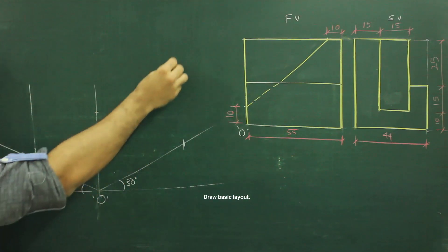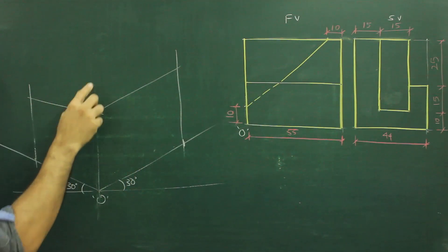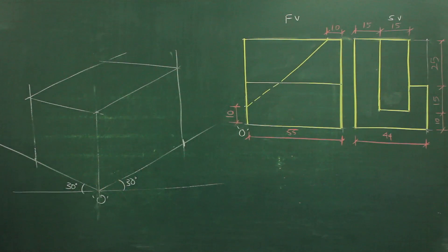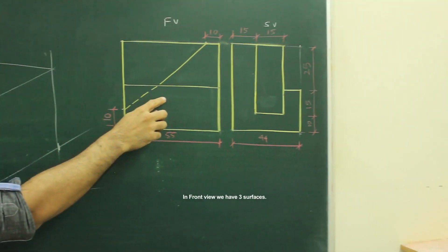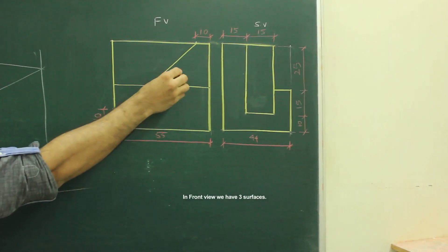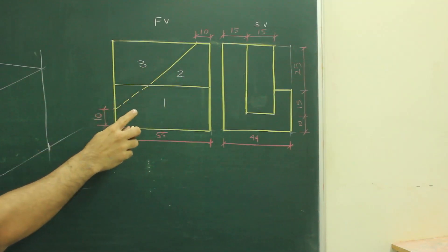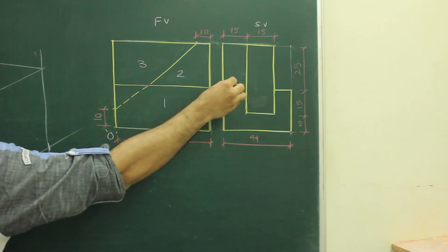First we will draw the layout. After drawing this, now we will count the number of surfaces in front view. If you see in front view, we have one surface, two surface, three surface — three components. And in the inside view, if you see, there are two parts, that is x and y.